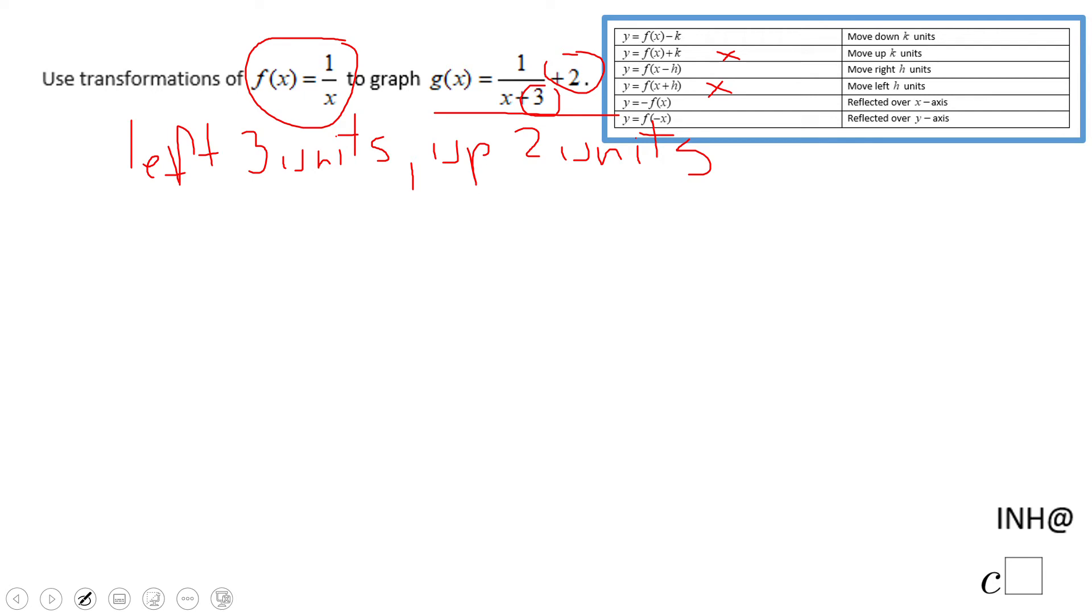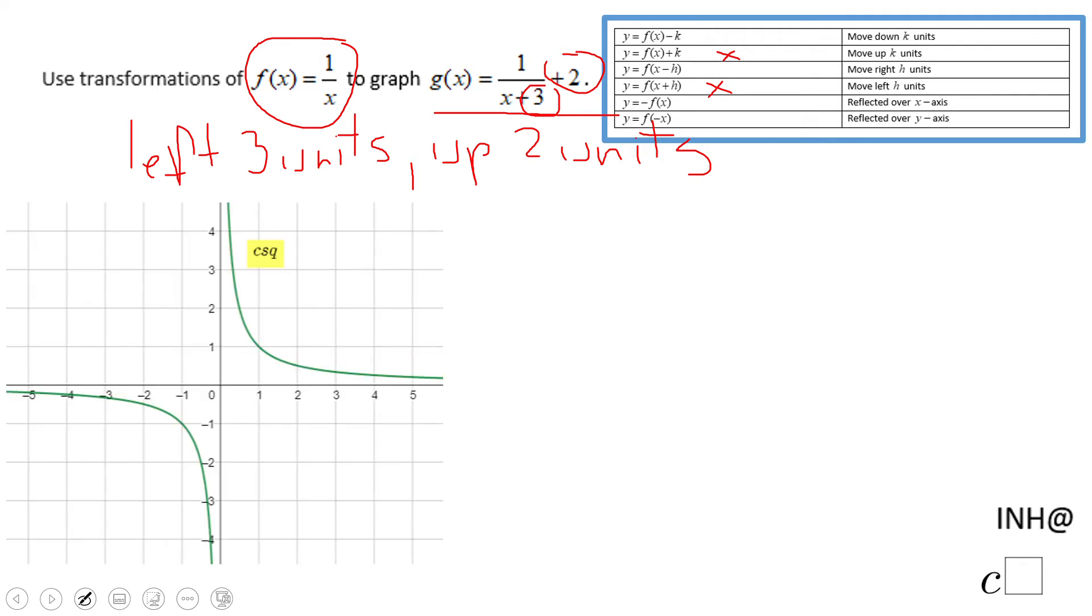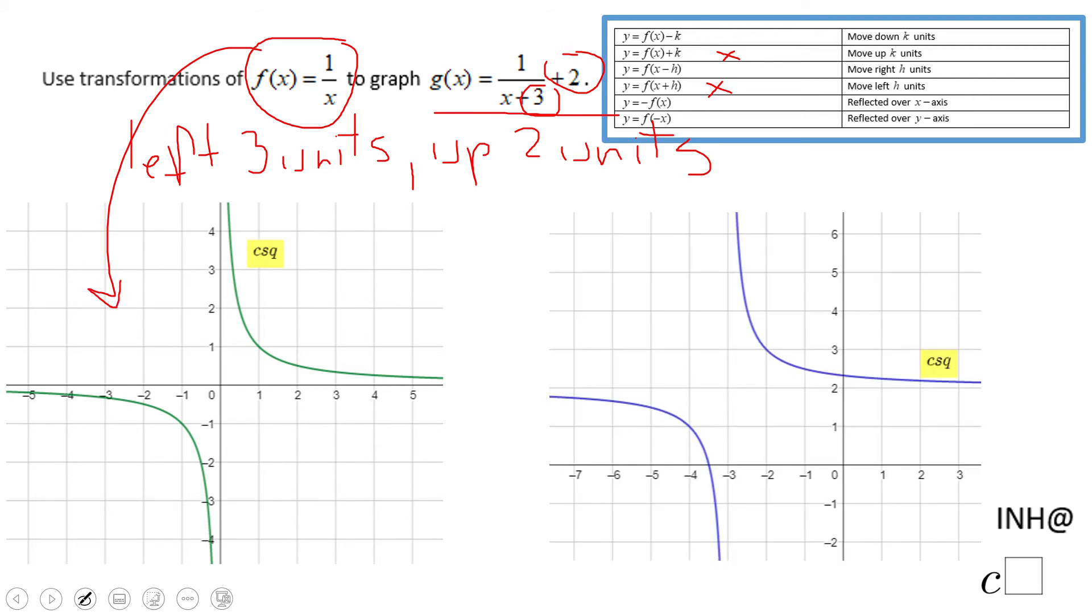Move left 3 units and up 2 units. This is the parent graph 1 over x, the reciprocal function. And you notice here, this is the same graph like the green one, just moved left 3 units and up 2 units.